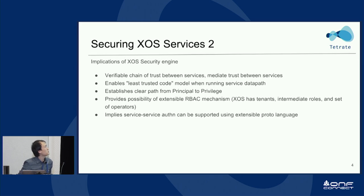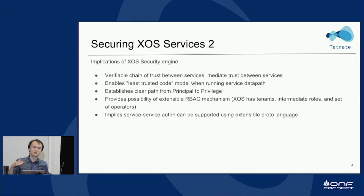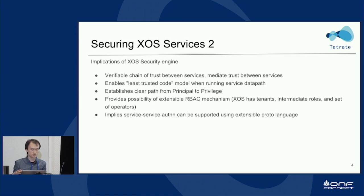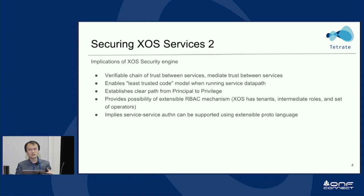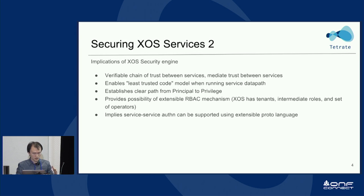That's the implication of the XOS security engine — it's a verifiable chain of trust. The Istio CA will issue a CA certificate to the sub-CA, which is the node agent on each node. Node means an actual machine, VM, or Kubernetes node. Then a leaf certificate is issued to every sidecar proxy for every XOS service instance component.